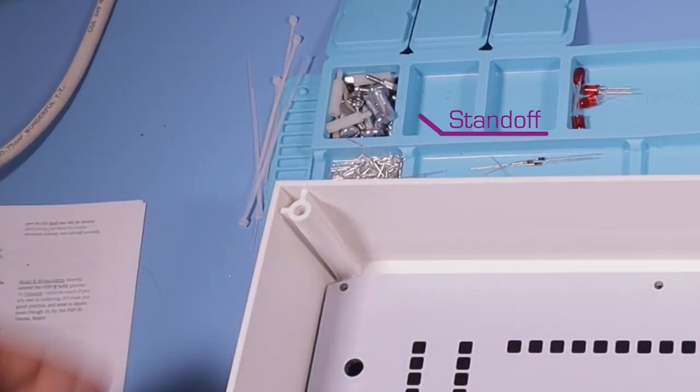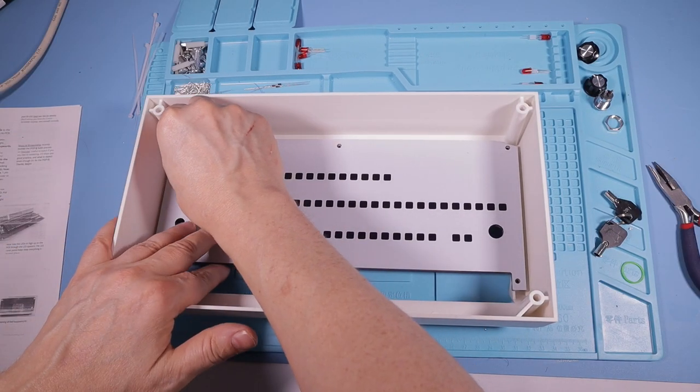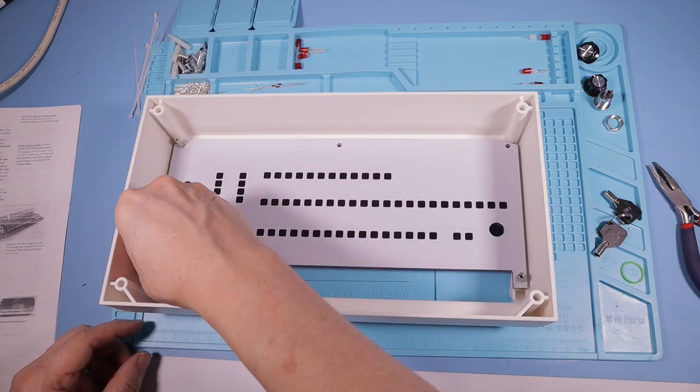Our kit should include a set of metal standoffs. Screw the panel down to the shell with those standoffs. Don't over tighten. You can crack the panel.